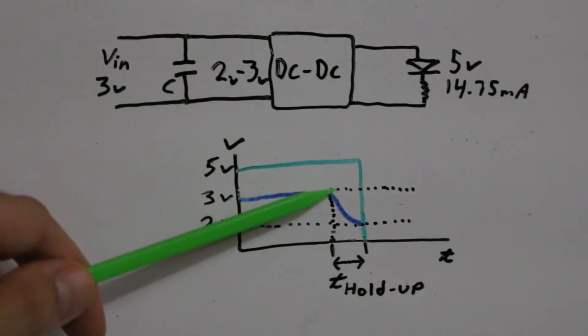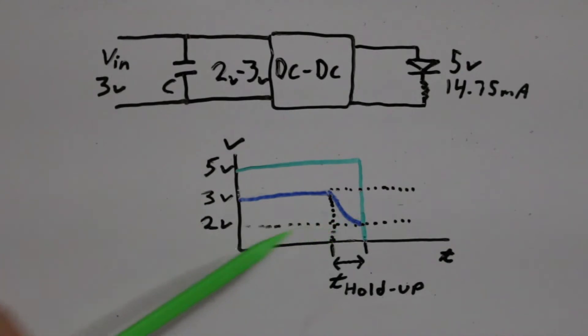At some point power will be lost. The capacitor will start discharging and until it gets down to 2 volts, we are still going to have 5 volts out, and this is the holdup time between 3 volts being lost and capacitor voltage going down to 2 volts.